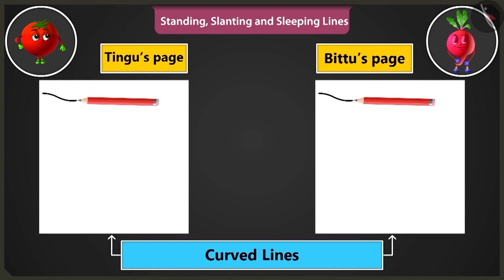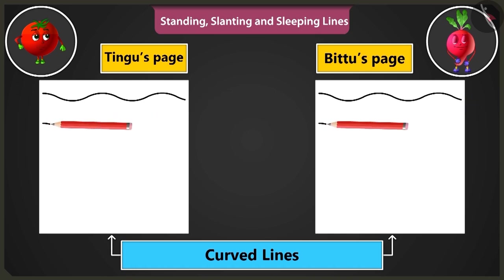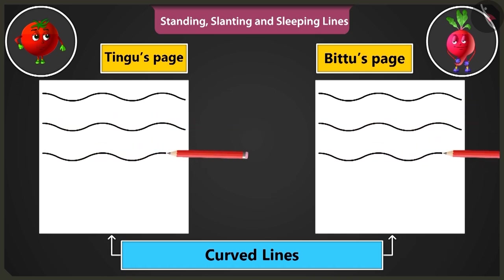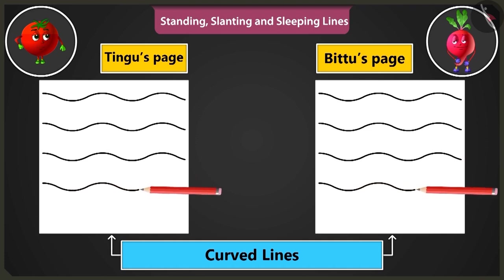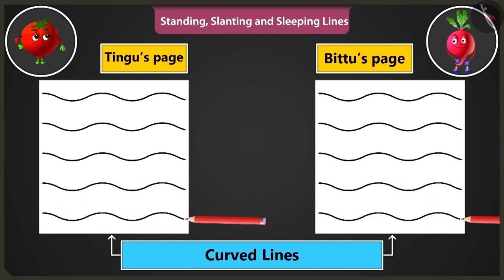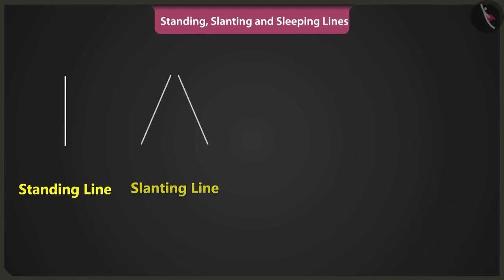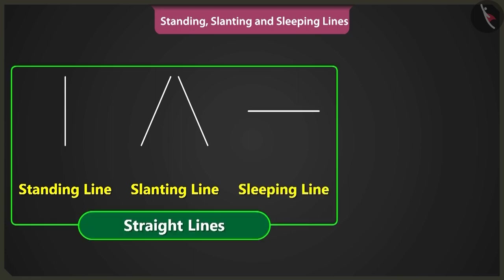Now let's practice making curved lines. To practice, we have to start drawing lines from the left side of the page to the right side of the page. This is the way to make curved lines. Hey, this looks like waves of the sea! Now you can easily draw pictures using straight lines like standing lines, slanting lines, sleeping lines, and also with curved lines.